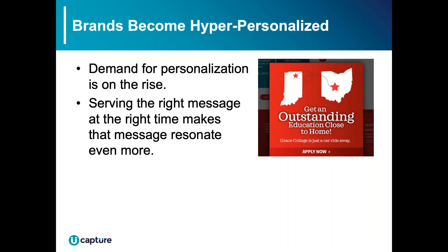There's a shampoo company called Prose — you go to their website and tell them your hair color, hair type, even your location by zip code, and it formulates a special shampoo and conditioner just for your hair, because the air and water differs by location. It's a hyper-personalized product, which is a great example of how multiple brands are using personalization to stand out to consumers.